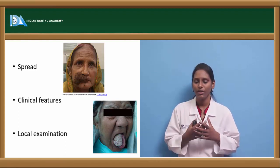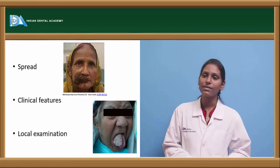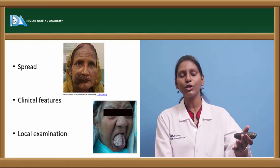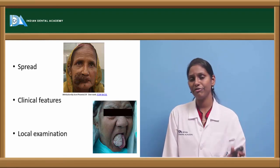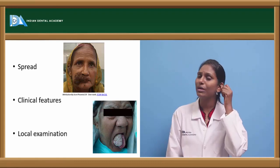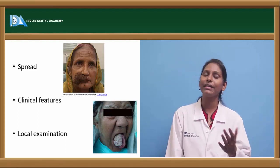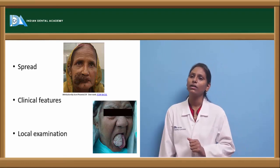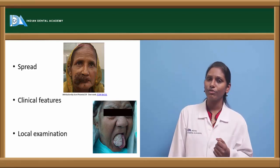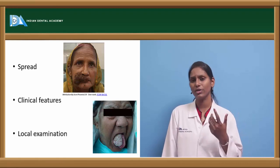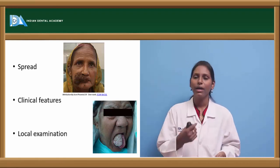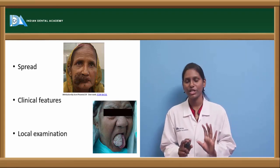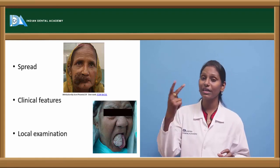Clinical features: the patient usually comes with a growth first, then pain develops. Unlike inflammatory swellings where pain precedes swelling, in malignant tumors swelling appears first, followed by pain when secondarily infected or when invading adjacent structures. Squamous cell carcinoma is usually seen in patients over 40 years of age. Males are more commonly affected, likely due to greater exposure to habits. It is seen in chimney sweepers, people working with oils, and those working in excessive sunlight.